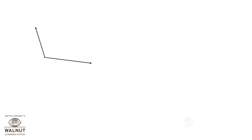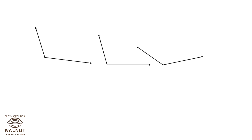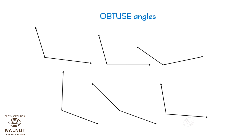Some angles are bigger than right angles. They look like this. These angles have a special name — they are called obtuse angles. All these are obtuse angles.